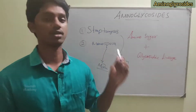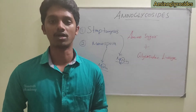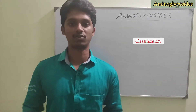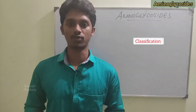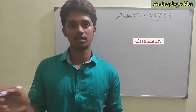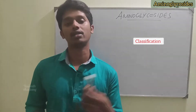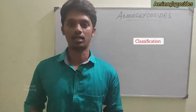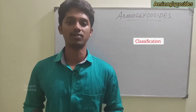That's a basic introduction about aminoglycosides. Now let's look at the classification. We can classify aminoglycosides based on the soil genus. From the Streptomyces genus, the drugs end in -mycin: streptomycin, neomycin, kanamycin, tobramycin. From the Micromonospora genus, drugs end in -micin. There are two examples: gentamicin and netilmicin.